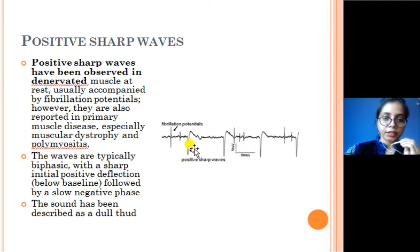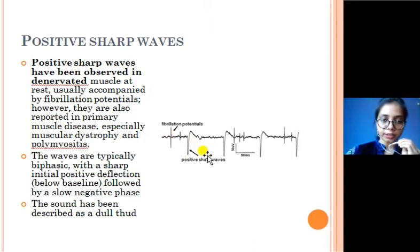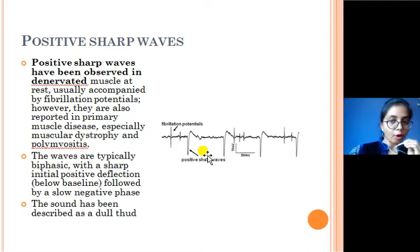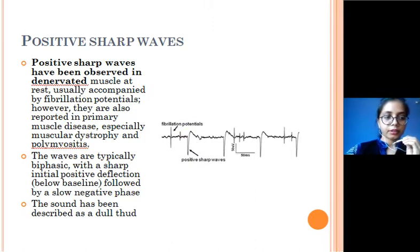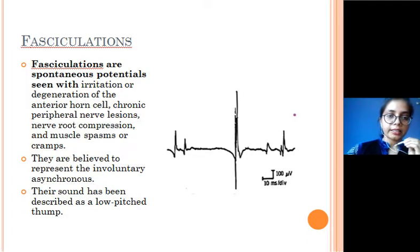As you can see here, positive sharp waves generally coexist along with fibrillation potentials and mostly occur together. They are primarily present in muscular diseases, especially muscular dystrophy or polymyositis. They are biphasic with an initial sharp positive deflection below the baseline, followed by a slow negative rise. The sound is typically a dull thud.